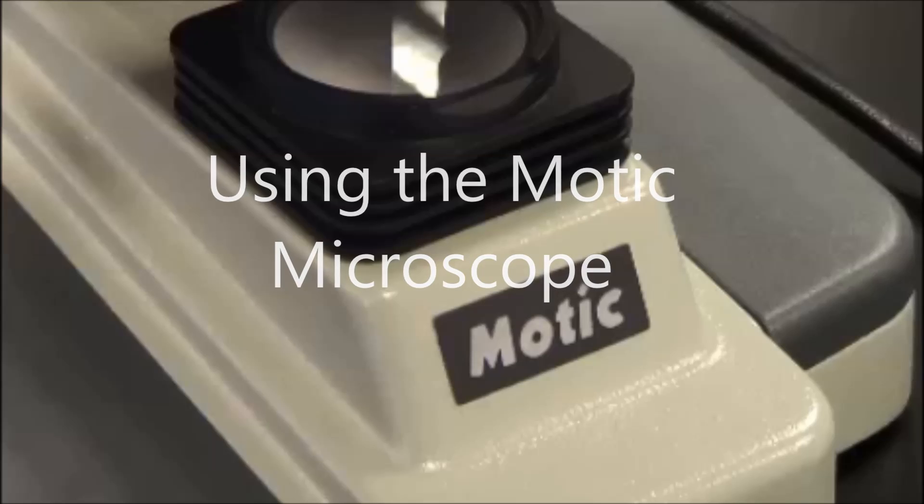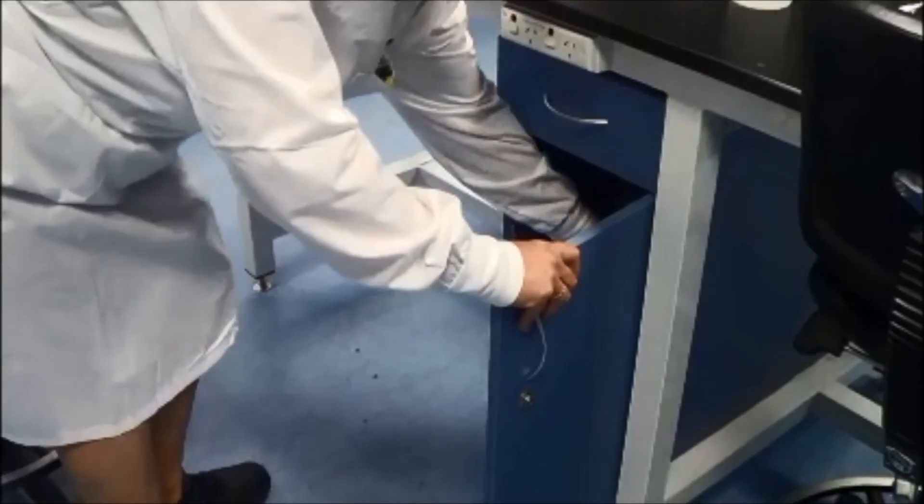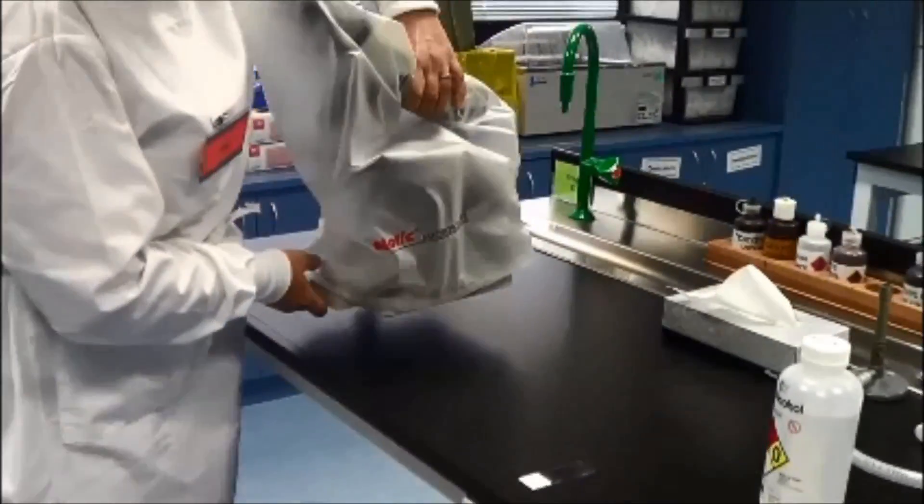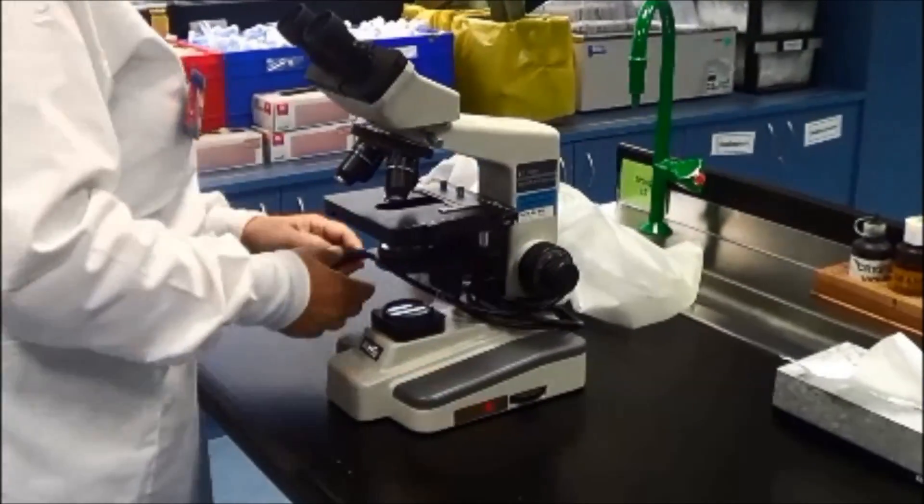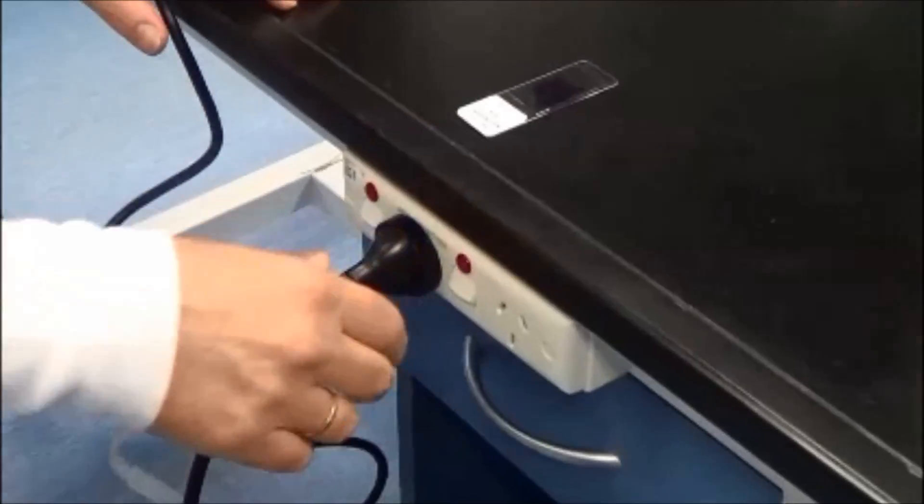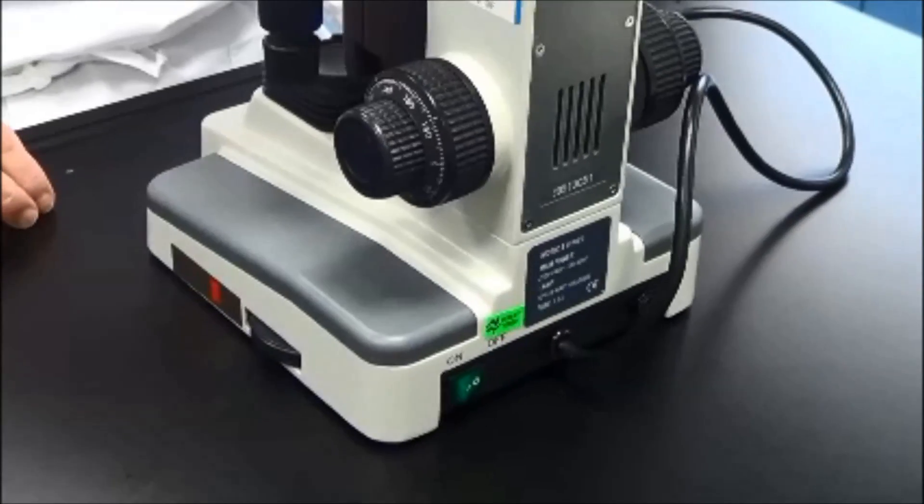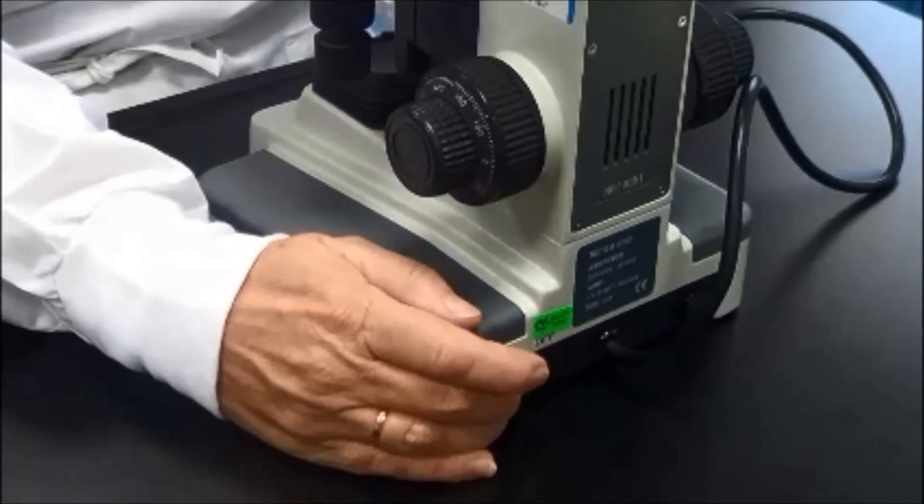Using the Motic Microscope. Carefully remove the microscope from the cupboard and place gently on the bench with the eyepieces pointed towards you. Remove the dust cover. Turn the microscope on and adjust the brightness to between 3 and 4 using the voltage control.